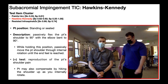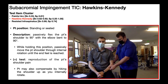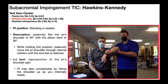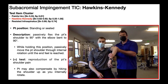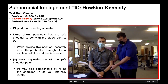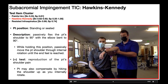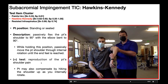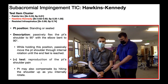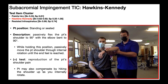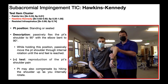To perform the Hawkins-Kennedy test, you can have the patient either standing or seated. I'm going to passively flex their shoulder up to about 90 degrees of flexion with the elbow bent to 90 degrees. Once in that position, I'll maintain it and then passively move their shoulder through internal rotation. A positive test is reproduction of their familiar shoulder pain. The patient may compensate by hiking the shoulder up, which can be due to pain or limited range of motion — but that compensation does not constitute a positive test. The positive test specifically is reproduction of familiar pain.